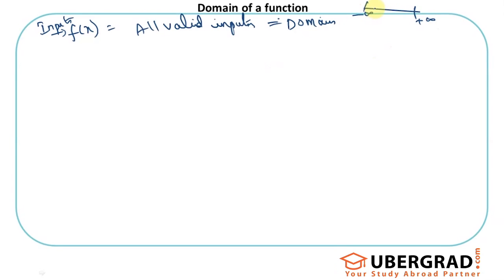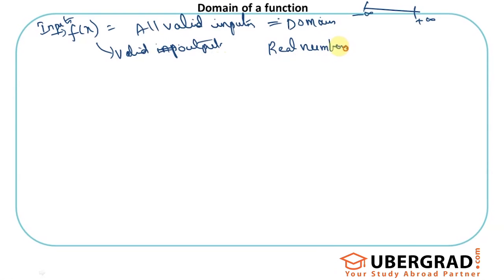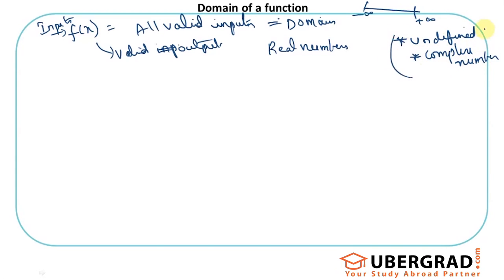What would be the problem if I give any value? Why would something not be considered a valid input? If the input cannot produce a valid output, then it is definitely not counted as a valid input. A valid output means a real number — the input should be real and the output should be real. You should not get an undefined situation or a complex number. If I get outputs like that, those inputs are not part of my domain.